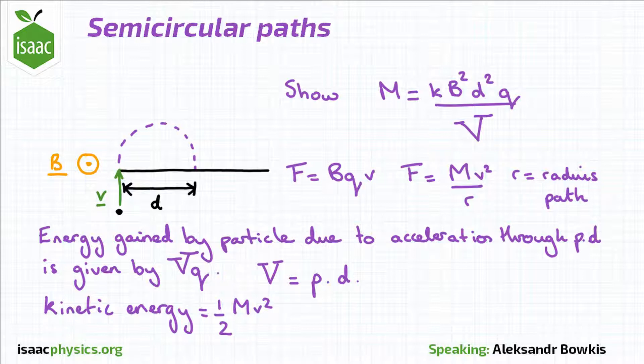Using these equations, it is possible to show that m equals kb squared d squared q divided by v, where k is a constant to be determined.